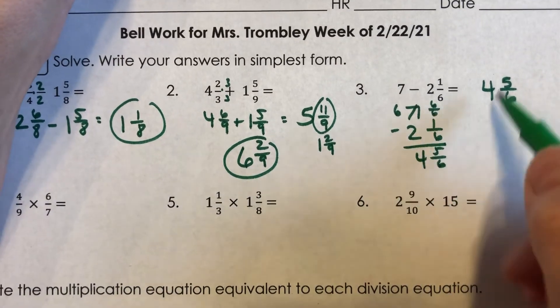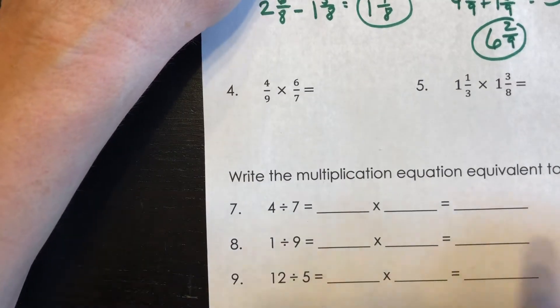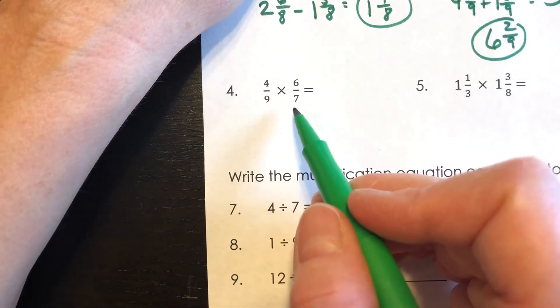So either way, you get four and five-sixths for your final answer. Now we're to some multiplication. I have four-ninths times six-sevenths.